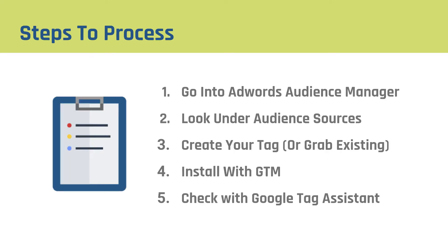So there are five steps in this process. First, you're going to go into the new AdWords UI and go into audience manager. Under audience manager, you're going to look at audience sources. You're going to create your tag or grab your existing one. Then you're going to go through and install it with GTM — I use a custom HTML tag, so I'm going to show you how to do that. And then finally, you're going to check that it's working with Google Tag Assistant.